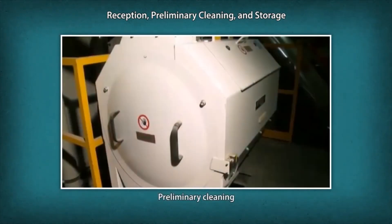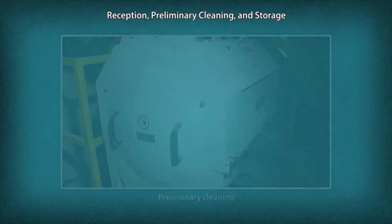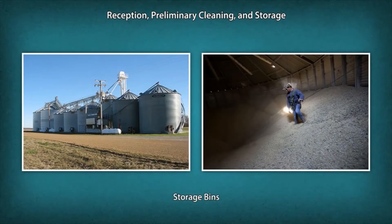Preliminary cleaning occurs prior to storage. After cleaning, the wheat is conveyed to storage bins. As grain is needed for milling, it is withdrawn from the storage elevator and conveyed to the mill area.